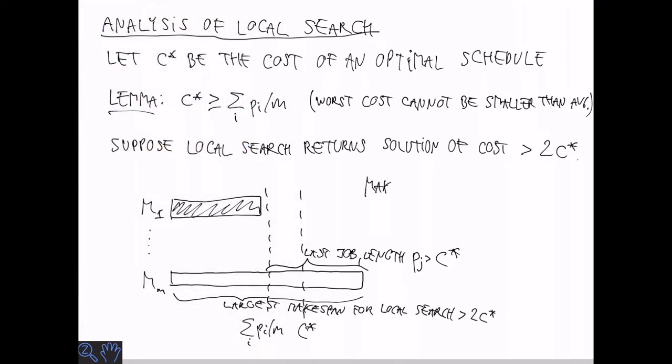So let's denote the length of the last job by pj. What can we say about the makespan? Well, it is at most equal to the start time of job j plus the processing time pj. The start time